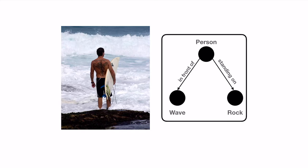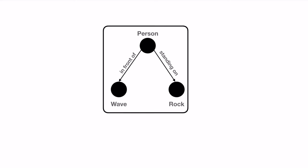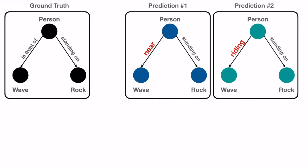let's take an example scene graph of a person standing on a rock in front of a wave. Now consider two predictions of scene graphs for this image, where in the first prediction, in front of is misclassified as near and in the second it is misclassified as riding.